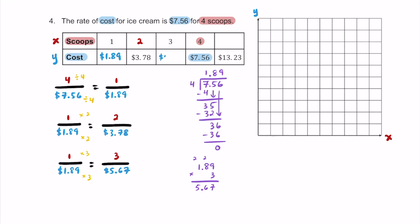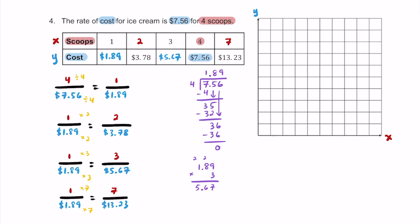For the last spot, the unit rate is $1.89 per scoop. What if we have $13.23? Dividing $13.23 by $1.89 gives 7 scoops. You can also estimate: $5.67 is about $6 and $7.56 is about $7; six and seven add to 13, which seems reasonable. Also, 3 scoops plus 4 scoops equals 7 scoops, so you can combine known values. Whatever method works for you is fine.